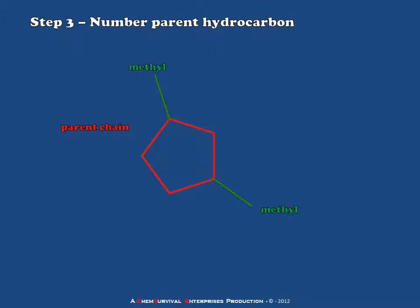Let's take a look at what happens if we number our ring in one direction or the other starting from a 1 at the methyl group. If I number around the ring clockwise, I have methyls at the 1 and 3 positions. If instead I start with a 1 at the same methyl and work counterclockwise, I have methyls at the 1 and 4 positions. Because the 1 and 3 positions are the lower set of numbers, this is the numbering scheme I will use.